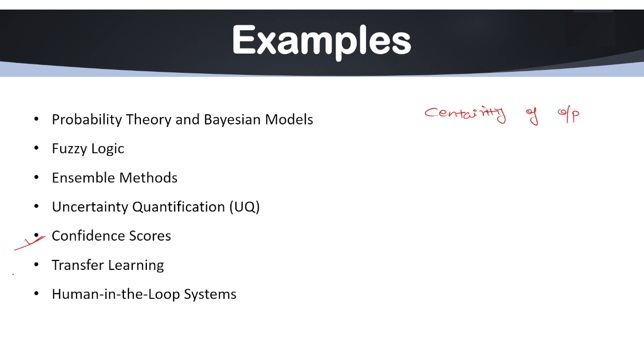Next we have transfer learning. It is basically a pre-trained model. Pre-trained models can adapt better to new data by leveraging previously learned patterns, reducing uncertainty in unfamiliar domains.